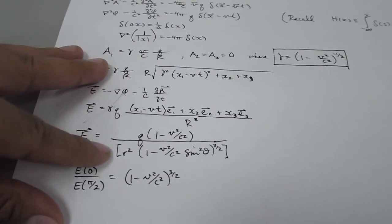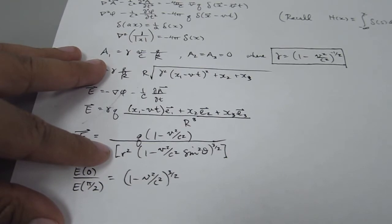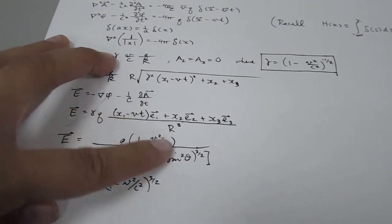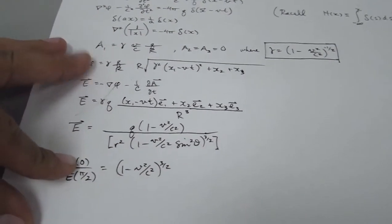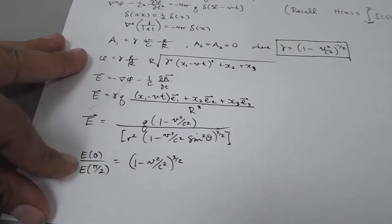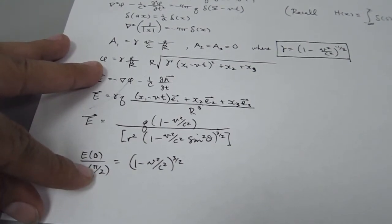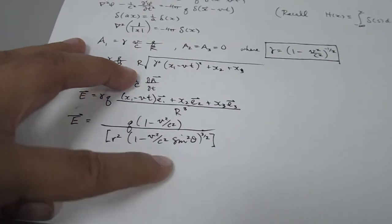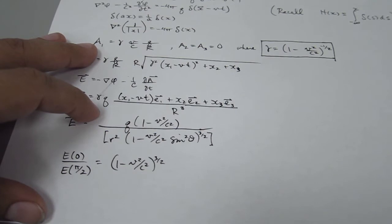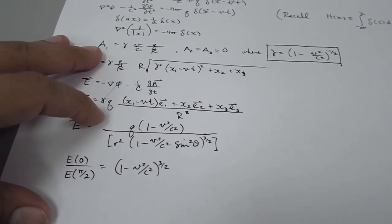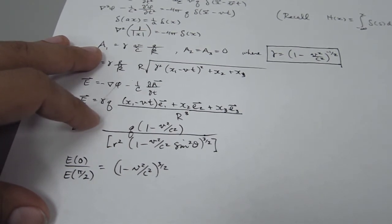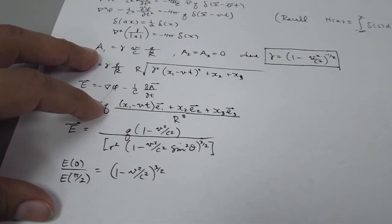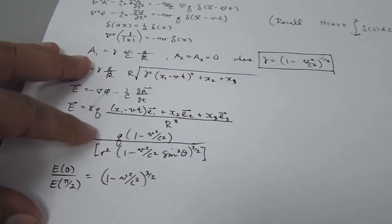Using spherical coordinates and plugging them in, you get this result. If you take the electric field at some point and the same electric field at a phase of pi over 2 afterwards, you get a value that is less than 1. That tells you that the electric field will be Lorentz contracted along the direction of travel. So in the static case it's spherically symmetric, but it's going to cave in along the direction of travel.